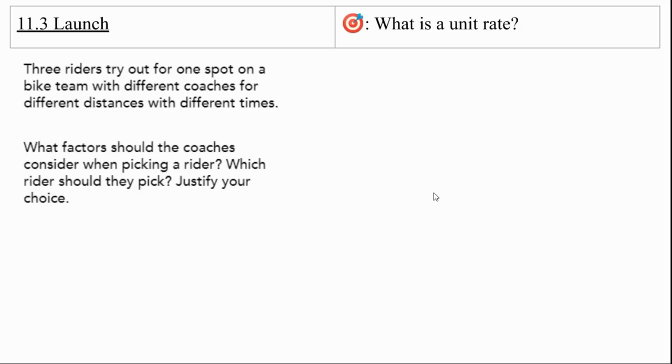We're going to be talking about constant speed today. Three riders try out for one spot on a bike team with different coaches for different distances with different times. What factors should the coaches consider when picking a rider? Which rider should they pick? Justify your choice.